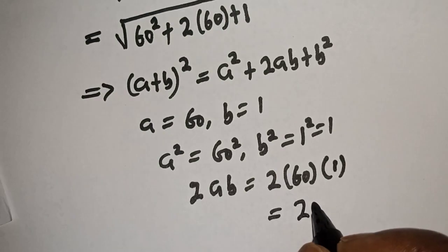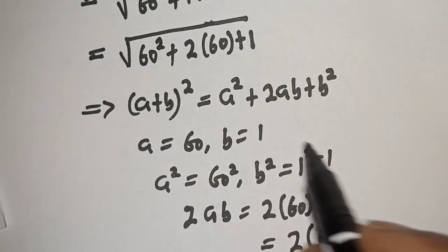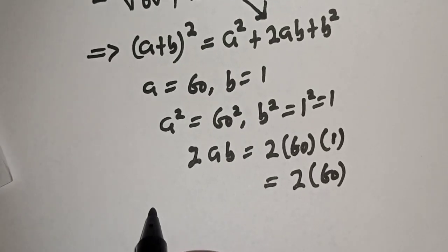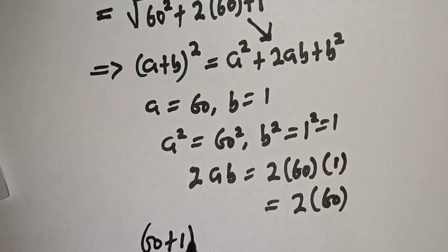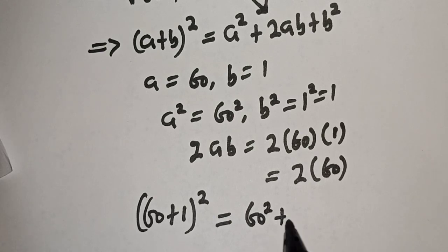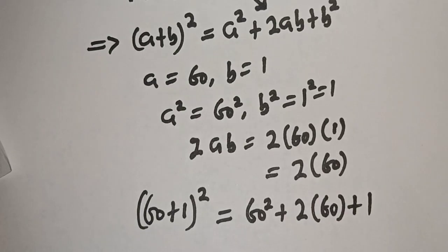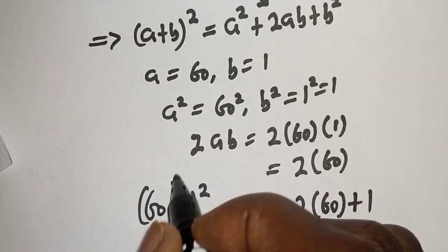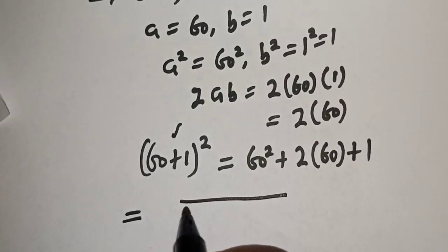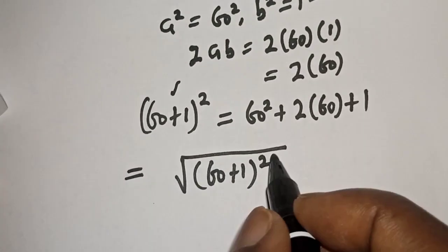Now if you compare all of these, this is equal to this. Therefore, (60 + 1) squared is equal to a squared — that is 60 squared — plus 2×(60)×(1). So we can substitute this into the root: equal to square root of (60 + 1) squared.